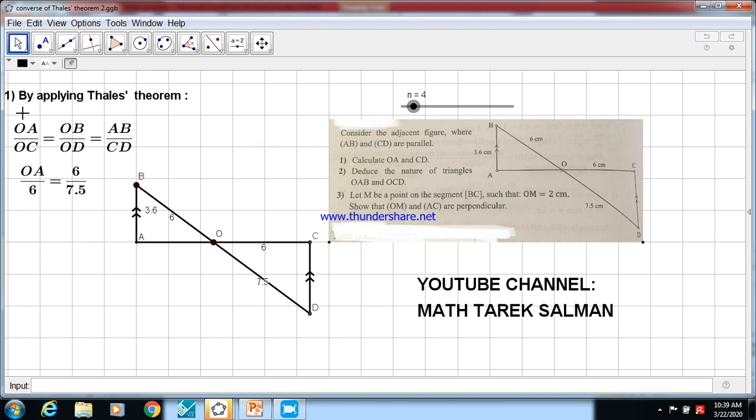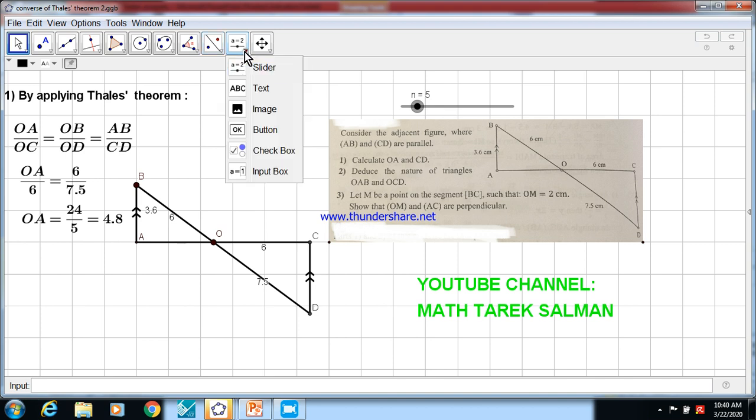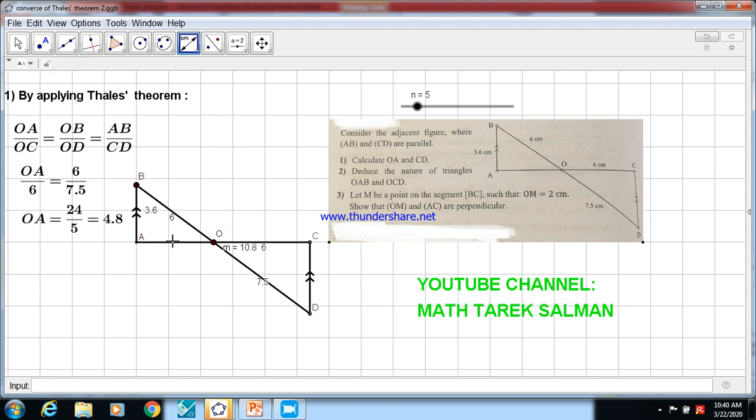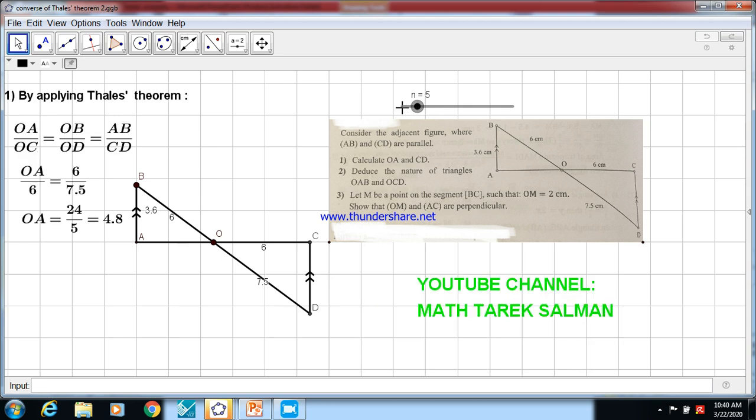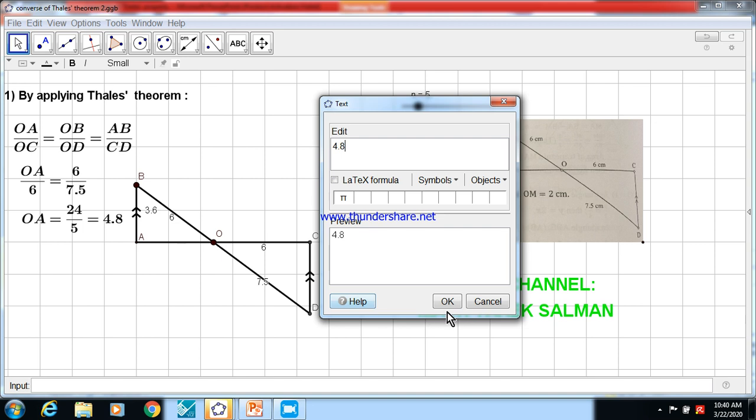We need to find OA, so keep OA. OC is equal to 6, given here. Equals OB, OB is 6 over OD. I use first these two ratios. OD is equal to 7.5. Continue the calculation here. We do cross product and we get OA equals 24 over 5 equals 4.8. So now we have OA equal 4.8. Let me write here the length 4.8.